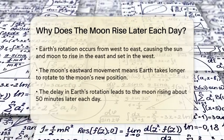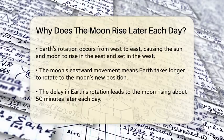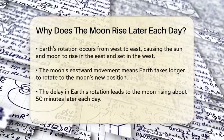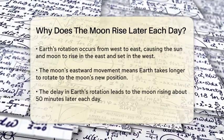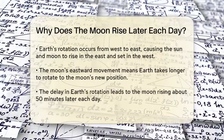However, because the moon is also moving eastward around the Earth, it takes a bit longer for the Earth to rotate to the point where the moon is visible again. This delay is what causes the moon to rise about 50 minutes later each day.